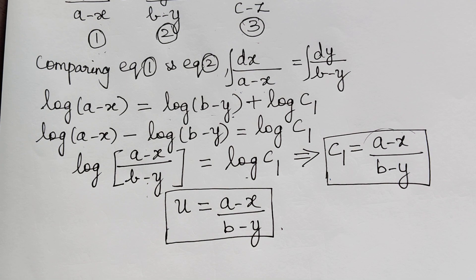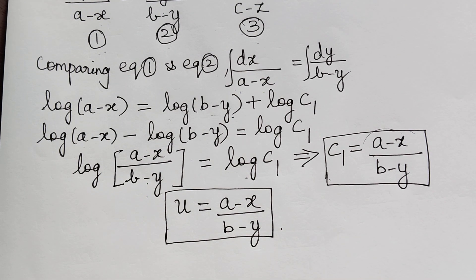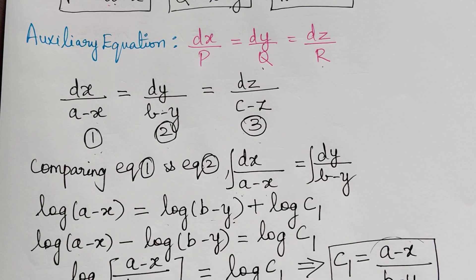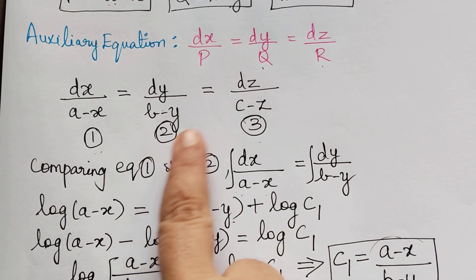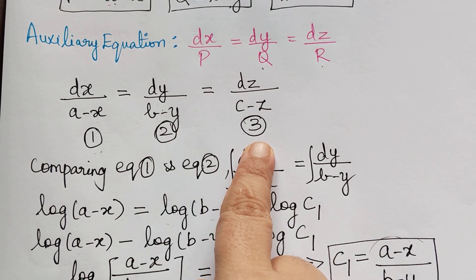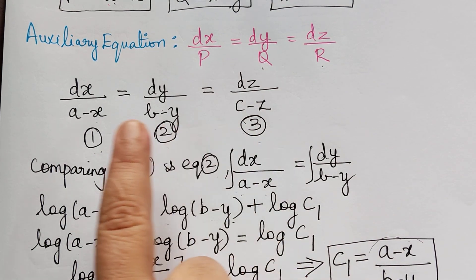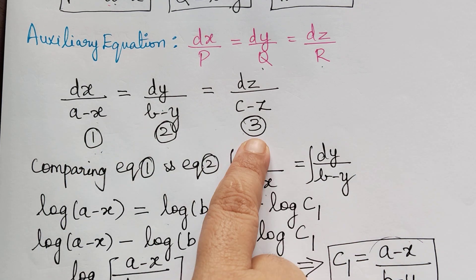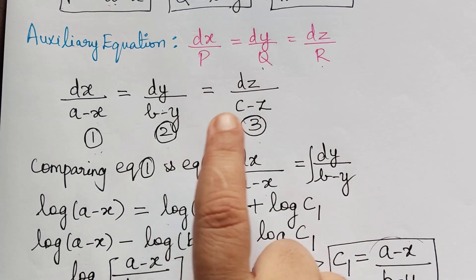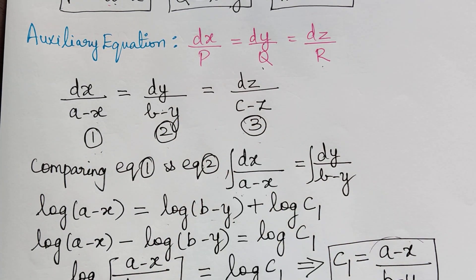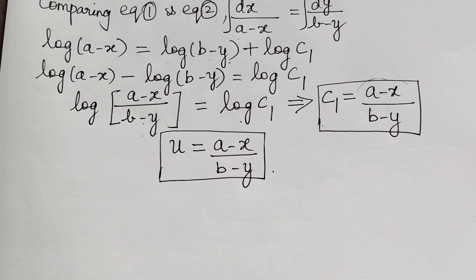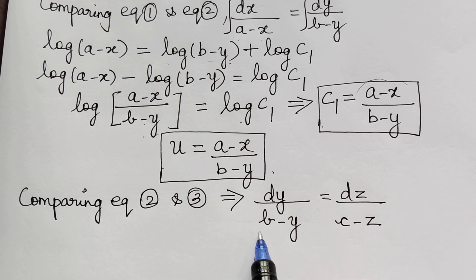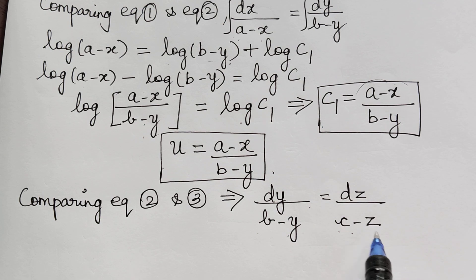In a similar manner we have to compare any other two equations to obtain the second solution. I am going to choose equations 2 and 3, but it is completely your choice — you can choose either 1 and 3, or 2 and 3. Comparing equations 2 and 3, we get dy by B minus Y is equal to dz by C minus Z.